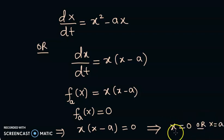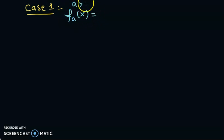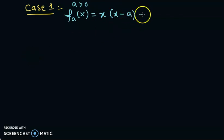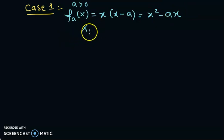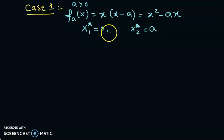Now we can vary a and see the behavior of the dynamical system. Consider Case 1: a is positive. We have f_a(x) = x(x - a) = x² - ax, and the two equilibrium solutions are x*₁ = 0 and x*₂ = a. To analyze stability, we compute the derivative f'(x) = 2x - a.